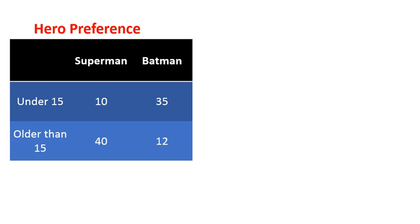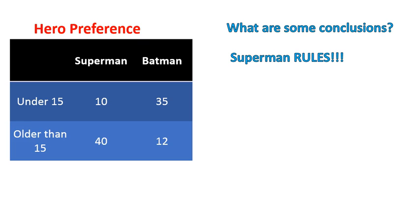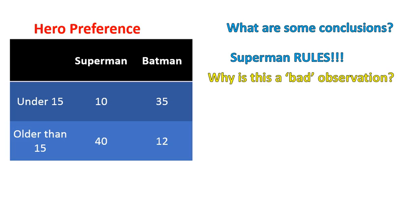Let's look at superhero preference — Superman versus Batman. What are some conclusions you could come to? Let's do another bad conclusion based off this. You could just say Superman rules — Superman has 50 and Batman only has 47. Why is this a bad observation? There are a couple of reasons why this would be stated in a poor way.